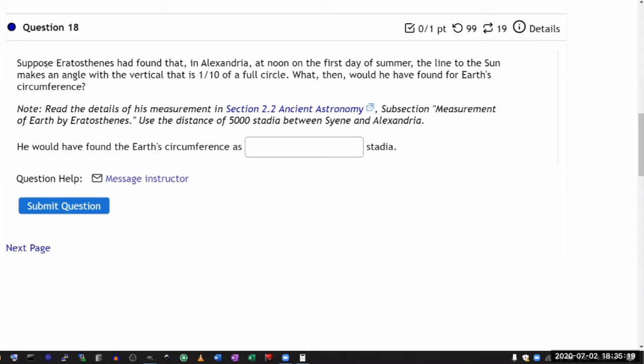So suppose the Greek philosopher who did the first known measurement of the radius of the earth or the circumference of the earth found that the angle measurement he made was different. In the reading you will see that he found it to be 1 over 50th of a full circle. But what if it's 1 over 10th of a full circle?